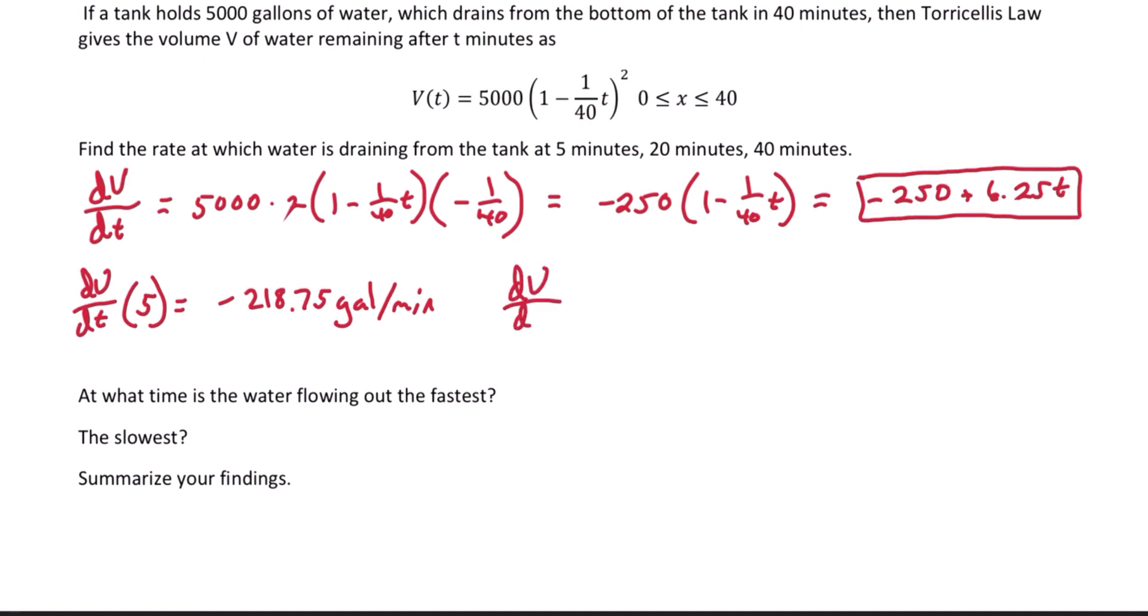dV/dt evaluated at 20 minutes. Plugging in 20 into the formula, we get negative 125 gallons per minute.